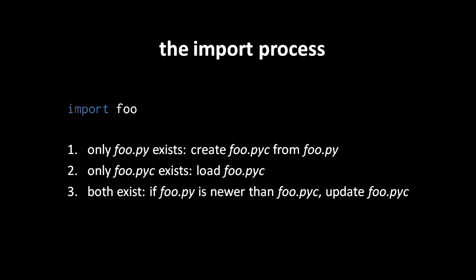In the second case, where only the compiled form is found — the .pyc file — Python will simply load the module from the .pyc file. Then in the case where both files exist, Python checks whether the .py file is newer than the .pyc file — that is, if the source is newer than the existing compiled module. If that's the case, obviously the programmer has updated their source code, and Python will recompile the module, updating the .pyc file before loading it.